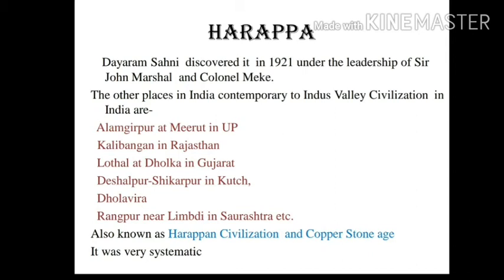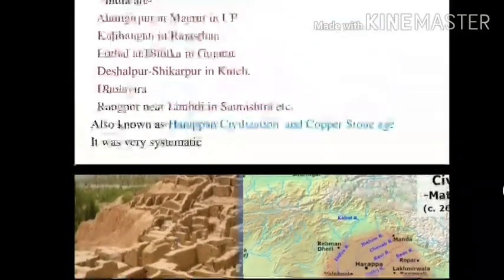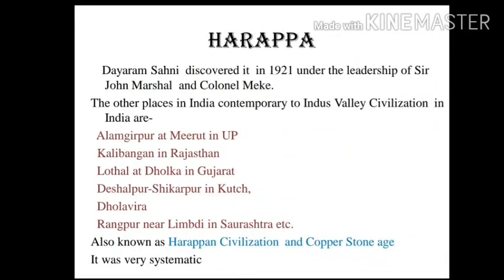The people of Harappa were very fond of wearing ornaments. The remains of the Indus Valley Civilization were found from many places in India, including Rapar in the Himalayan region, Alam Girpur at Mirat in Uttar Pradesh, Kalibangan in Rajasthan, Lothal at Dholka in Gujarat, Deshalpur and Shikharpur in Kach, Dholavira, Rangpur near Limdi in Saurashtra, Srinathgard near Gondal, Kuntasi near Morbi, and Somnath.